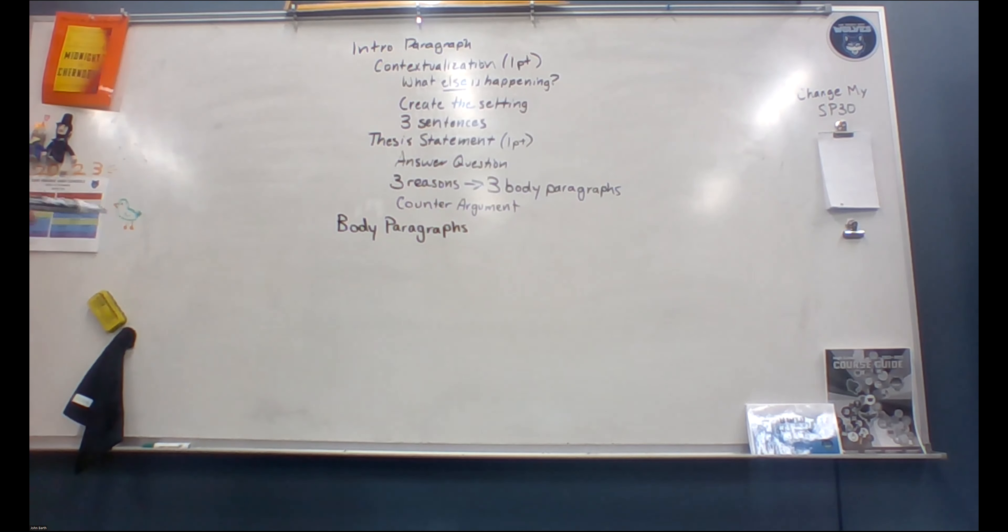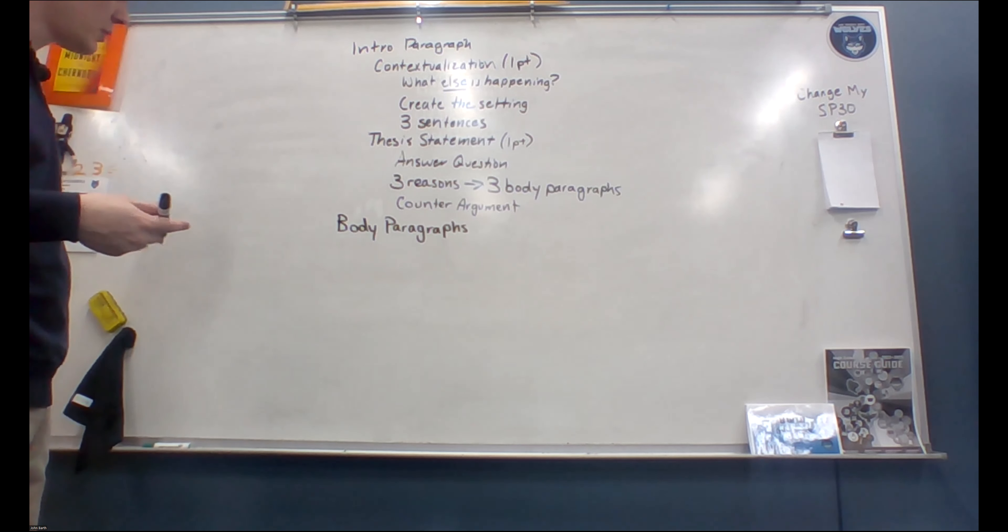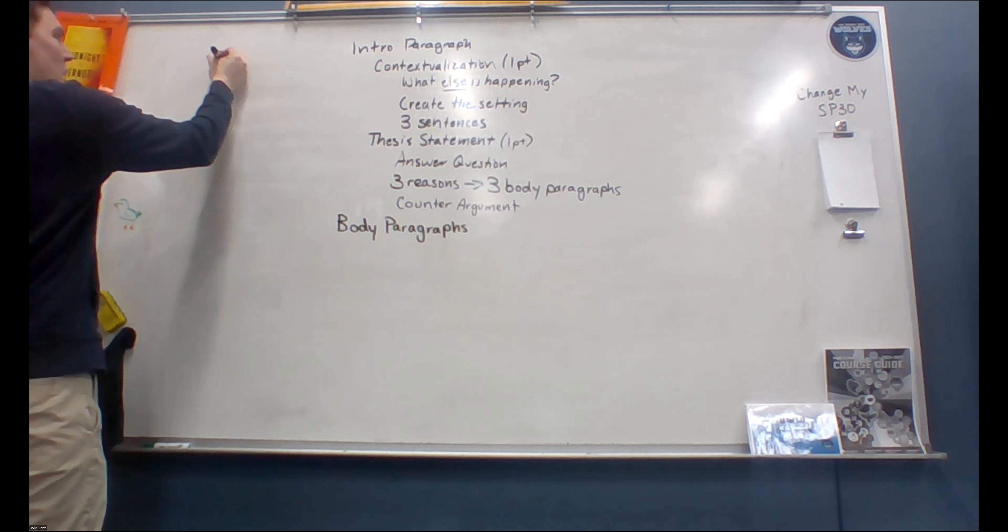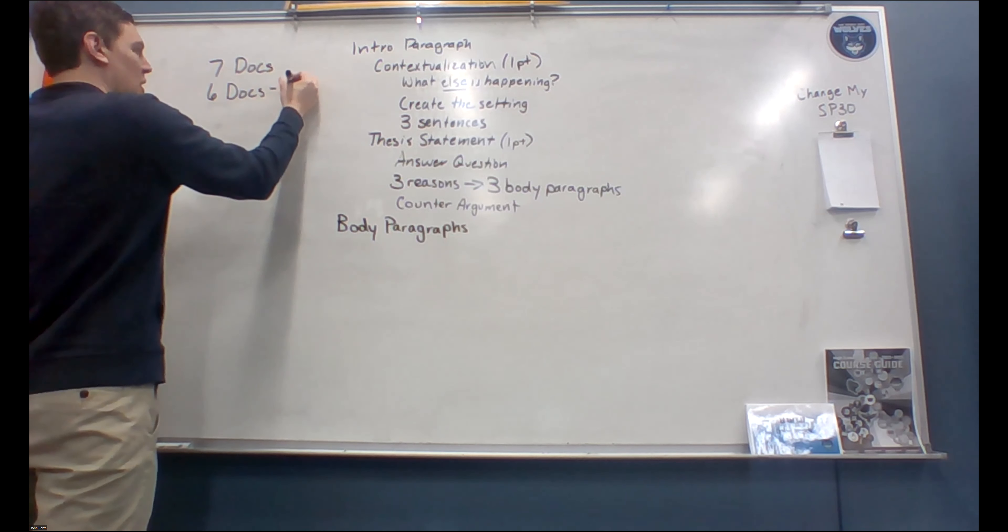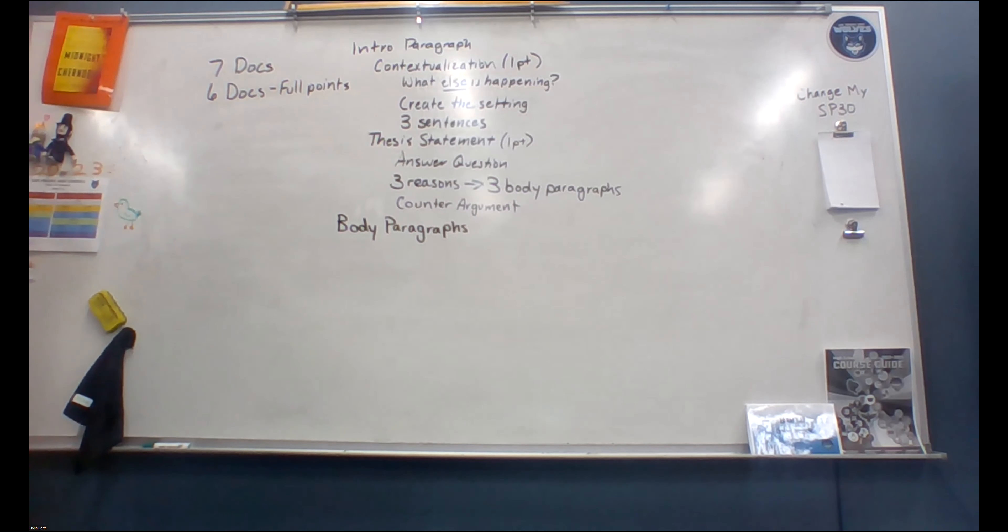And then we have our body paragraphs. So our body paragraphs are where the majority of the points are going to come from. There are seven documents to choose from. To get full points, you need to use six documents. And they don't care where. In our last essay that we wrote, you had to write about, I think it was two categories. I think a lot of people at least wrote that essay number two. And so you would put three documents or three pieces of evidence in each body paragraph. That's fine. If you have a three body paragraph essay, then you do two documents for each paragraph. So you have to use six and you get to decide where to put it. You usually don't want to have like five documents in one paragraph and one in the other. That's not good. Usually you want to try to even it out.